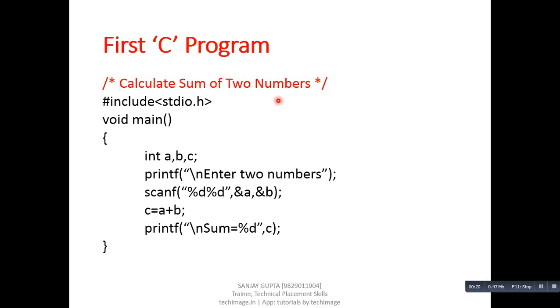This first statement, which you are seeing in red color, is enclosed in slash asterisk and asterisk slash. This first statement is known as a comment. Comments are statements which are available inside source code but they do not participate in the execution of the program.